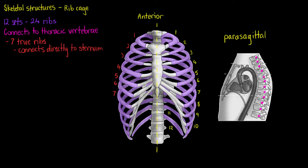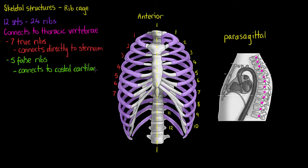The next and last five sets of ribs we classify differently and call them false ribs — meaning they are not connecting directly to our sternum. The top three sets, so 8, 9 and 10, are going to connect to the costal cartilage of our number seven rib.